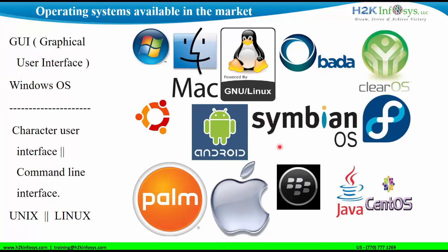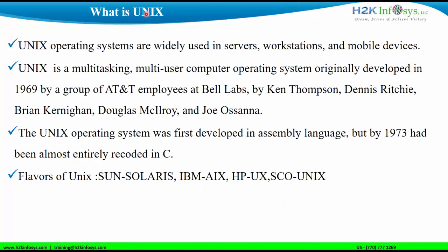As we all know, Microsoft Windows is the most popular operating system, and most of the backend applications are running on Linux, which we will be talking about. First, let me talk about Unix. Unix is the most powerful multitasking and multi-user operating system, widely used in servers, mobile devices, and workstations. Most web servers, application servers, and databases run on Unix. It was originally developed in 1969 by a group of AT&T employees at Bell Labs and was completely written in C.